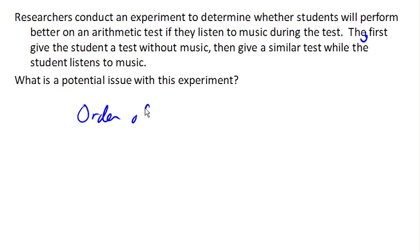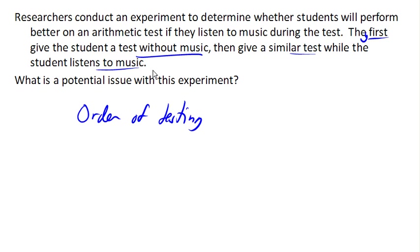In this case, they always give the first test without music, and then a similar test with music. It's reasonable to think — particularly if the student hasn't done arithmetic in a while — that they might just need a little time to warm up, and that most people are going to do better on a second test than on a first test, regardless of whether the music has any effect or not. So here, the order of testing is a confounding variable in the experiment.